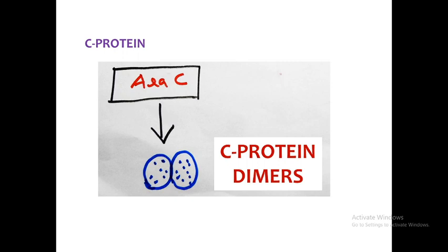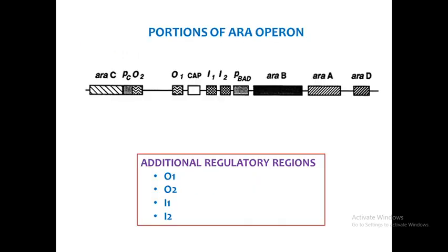There is a regulatory protein in the arabinose operon called C protein, similar to the repressor protein found in the lac operon and tryptophan operon. The AraC gene is responsible for production of C protein. C protein units usually exist as dimers — individual C protein units combine with another C protein unit to form C protein dimers.